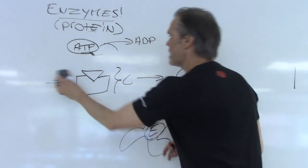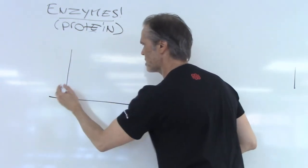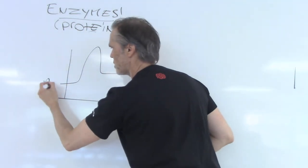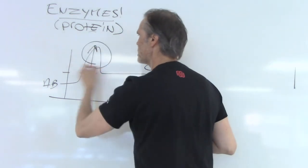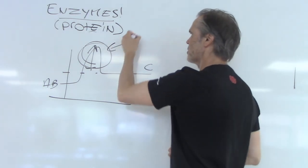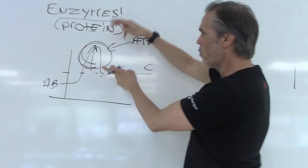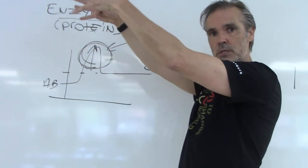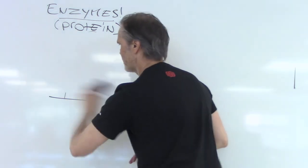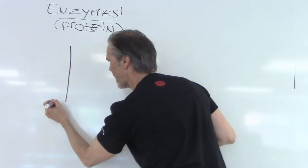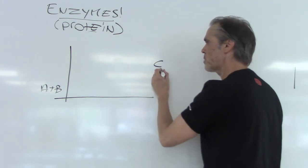When we look at the energetics graph for this reaction — A and B start here, C is at a higher level — the energy of activation is the bump. This is where the enzyme got the ATP from; this is where the bond was formed and the enzyme allowed it to happen. Instead of having this big mountain, because A and B don't react spontaneously, what the enzyme did is lower that peak.